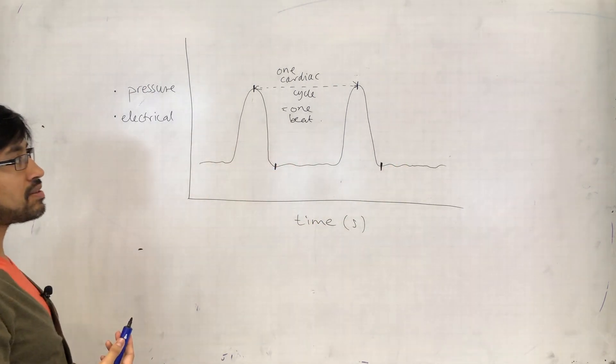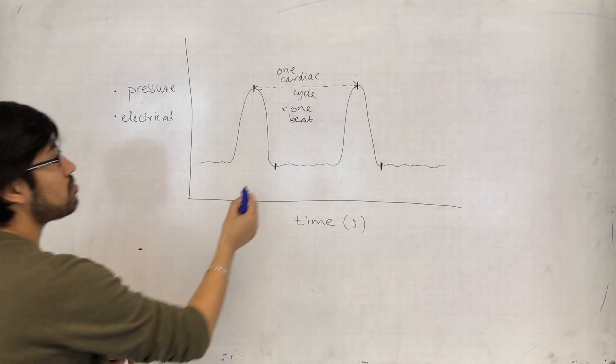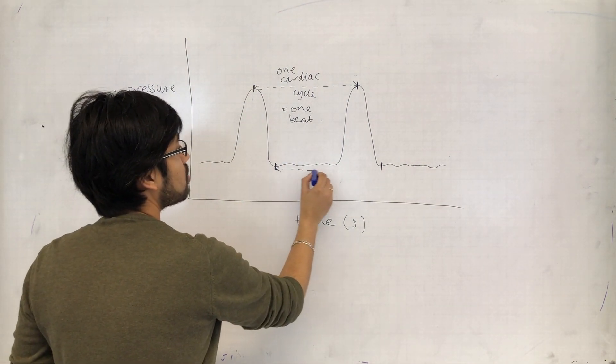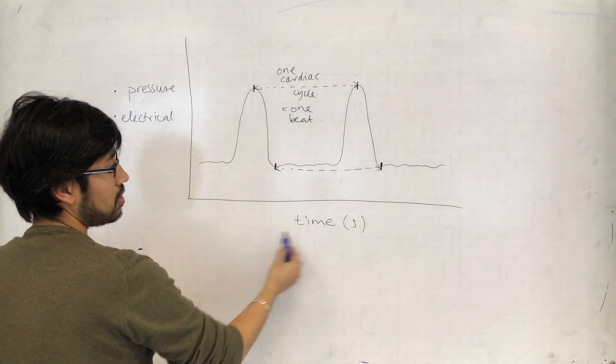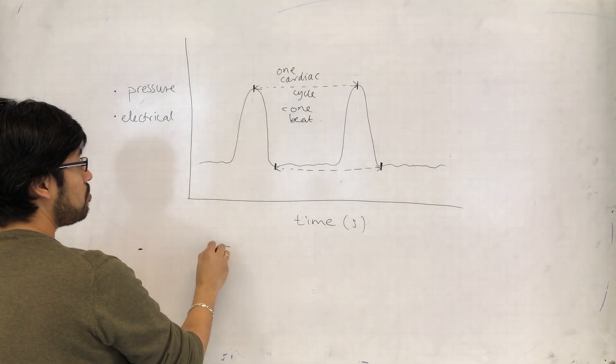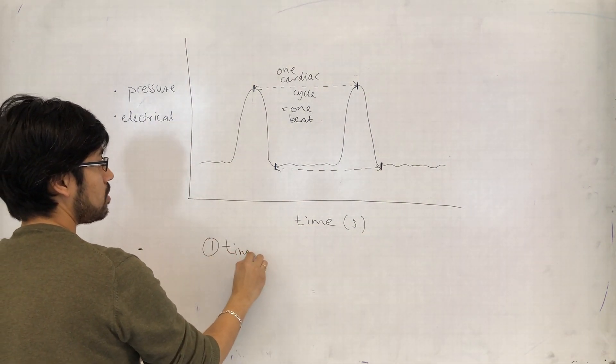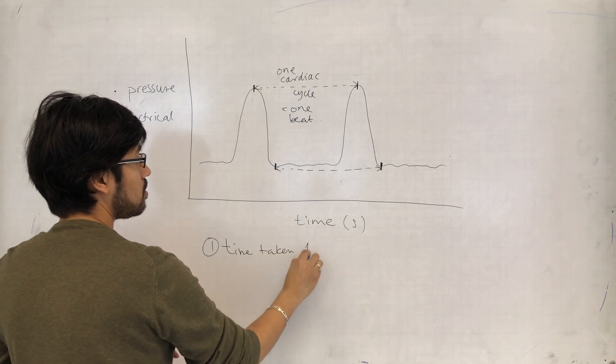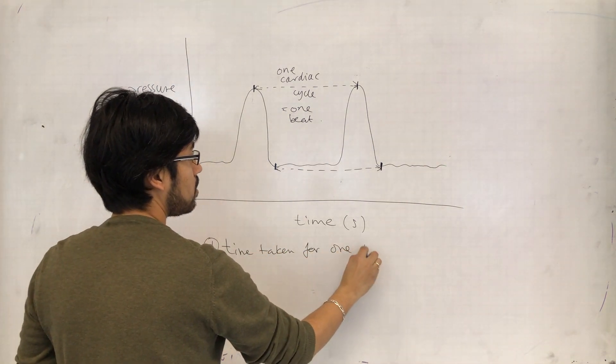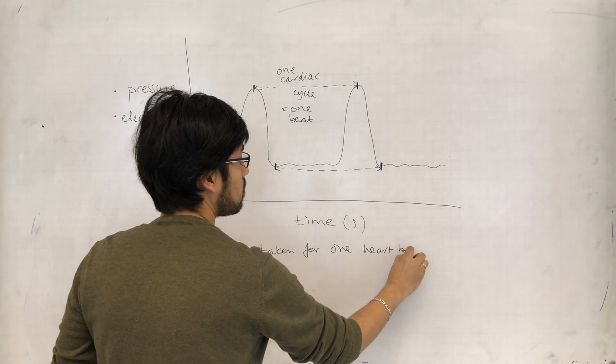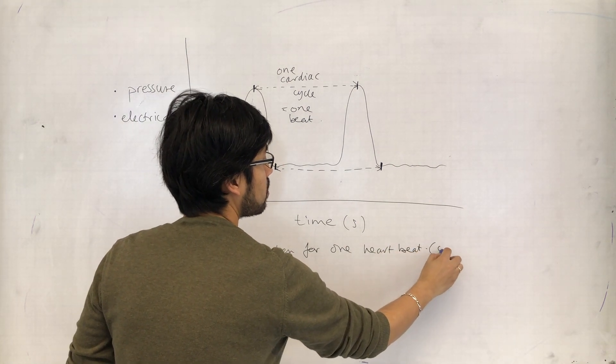...that appear to be the same event in the cardiac cycle and find the time it takes between those two points using the scale on the x-axis, that will be the time taken for one heartbeat or one cardiac cycle.